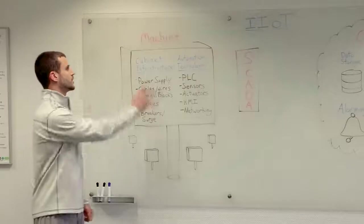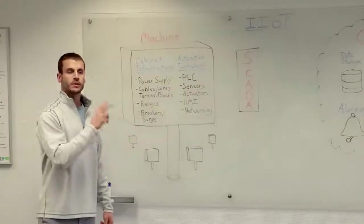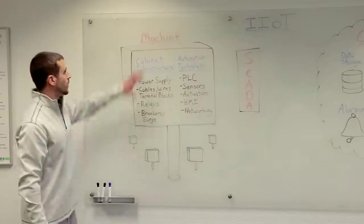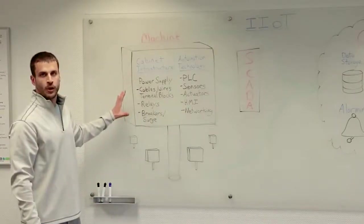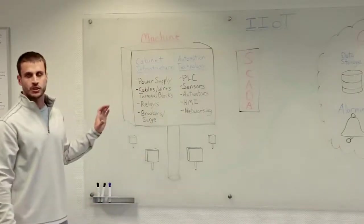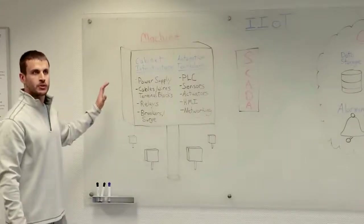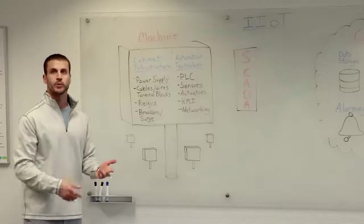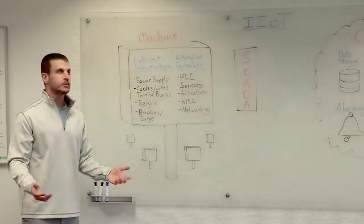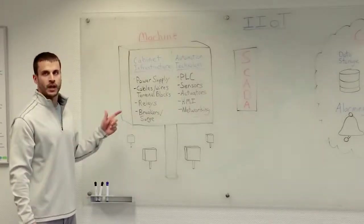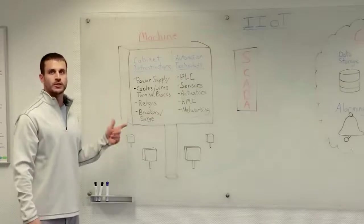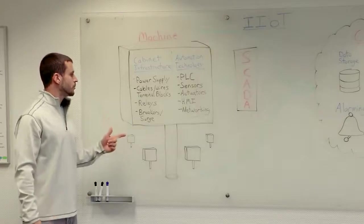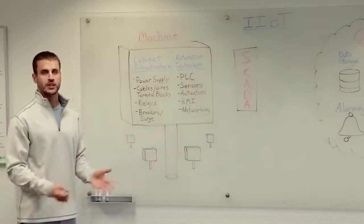Now, when we look closely at the machine, we'll see two distinct categories of products within the control cabinet. On the one side, you're going to have what I'm referring to as the cabinet infrastructure. These are the components that are responsible for electrically powering, distributing the power, and protecting the machine from power. So, you're going to have components like power supplies, cables, wires, terminal blocks to distribute that power. You'll have relays, and you'll protect the machine with your circuit breakers and your surge protection.